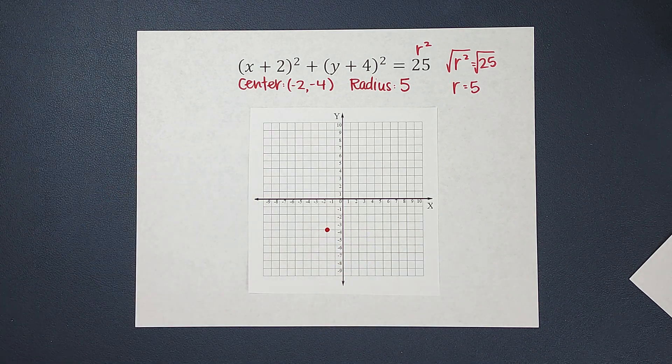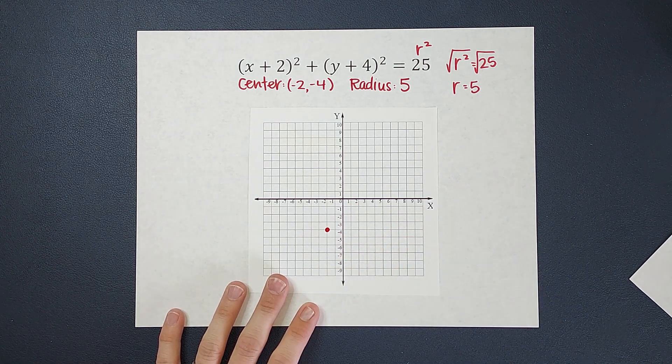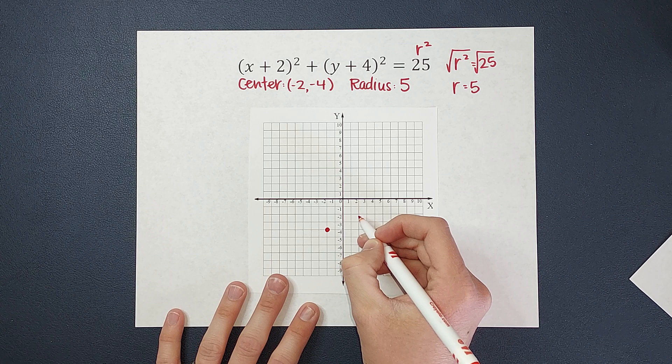Now my radius, if you need to review, that is from the center to the end, not the end, there's not really an end to a circle, right? The edge of my circle.